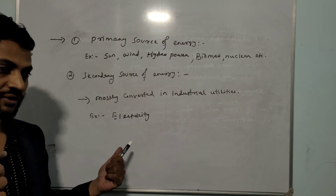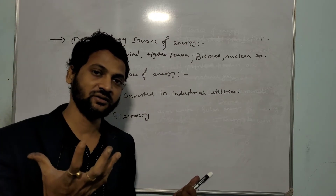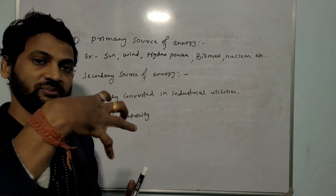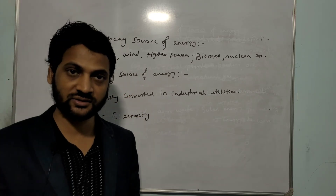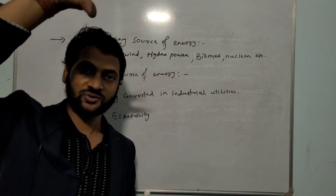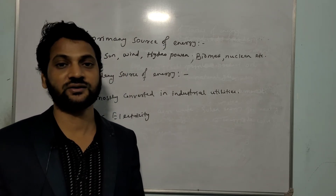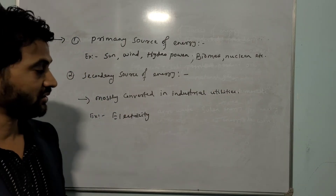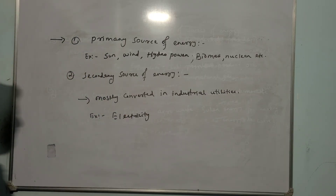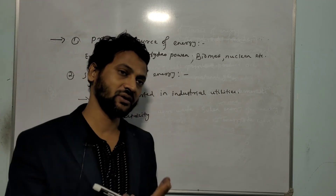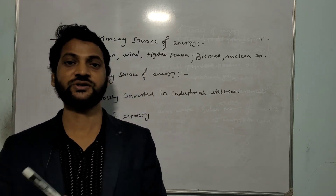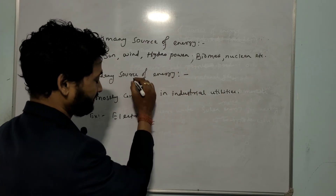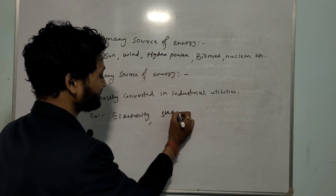For example, you might have seen a solar panel — solar energy gets converted to electrical energy. So solar energy is the primary source of energy. To define that, we need to compare between two levels or two sources of energy. Similarly, if hydro energy is converted to steam energy, then hydro energy is the primary source and steam energy is the secondary source.